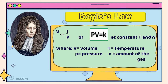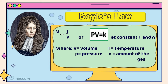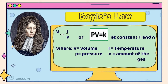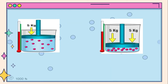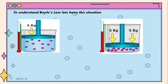Mathematically, we can express this relationship as V is inversely proportional to P at constant T and N, or simply PV equals K, where V is the volume, P is the pressure, T is for temperature, and N is for the amount of the gas.